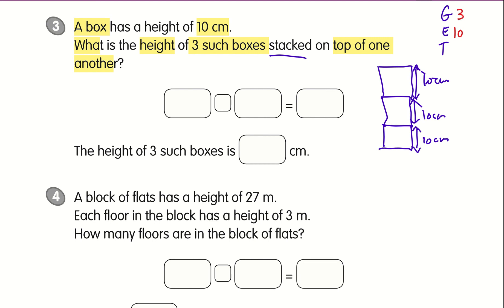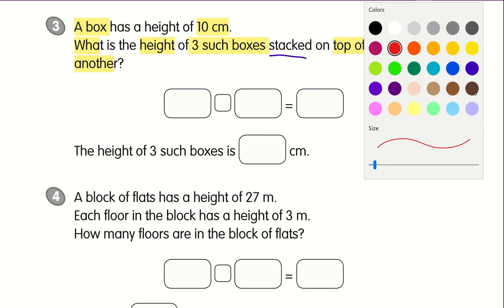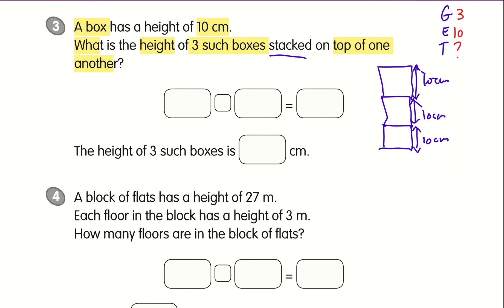The height of three such boxes means there are three groups. So we need to find the total. To find the total, we do a multiplication of 3 times 10, which gives you 30. The height of three such boxes is 30 centimeters.